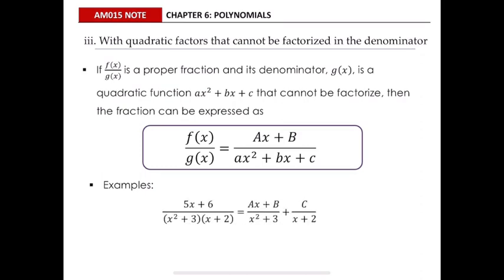The example fraction has two factors in the denominator: one is a quadratic factor that cannot be factorized, and the other is a non-repeating linear factor. The fraction is decomposed as a sum of two partial fractions. When the denominator is quadratic, the numerator must be a linear expression.